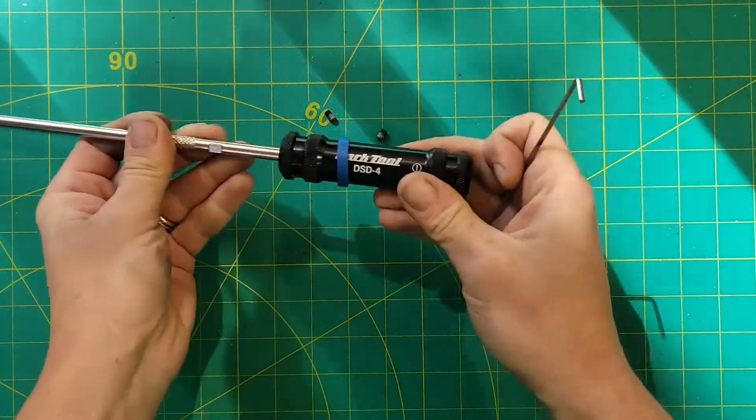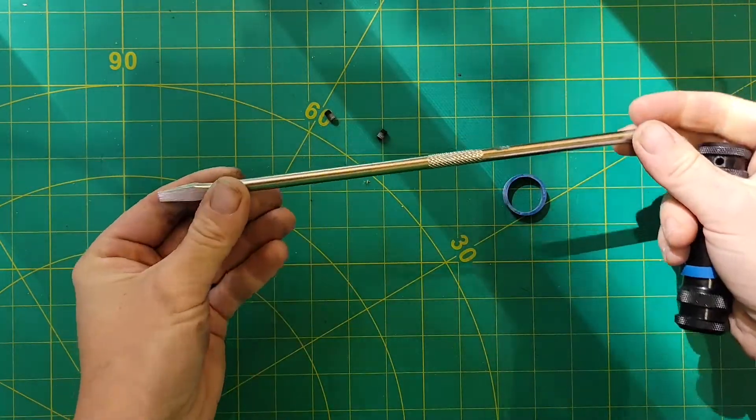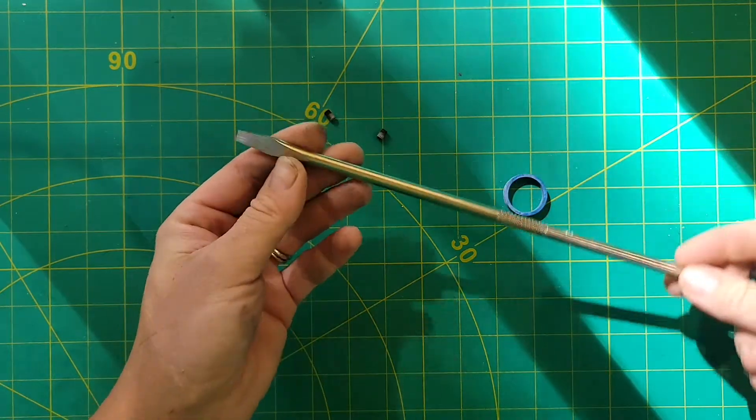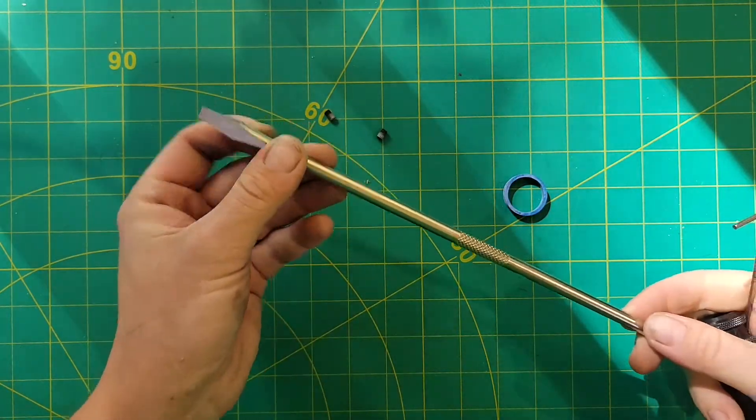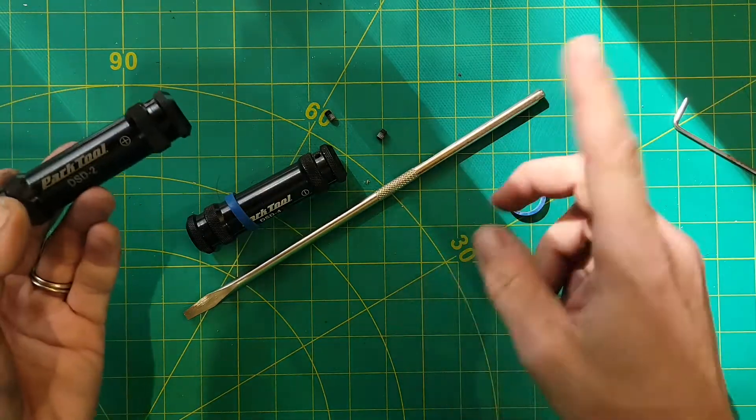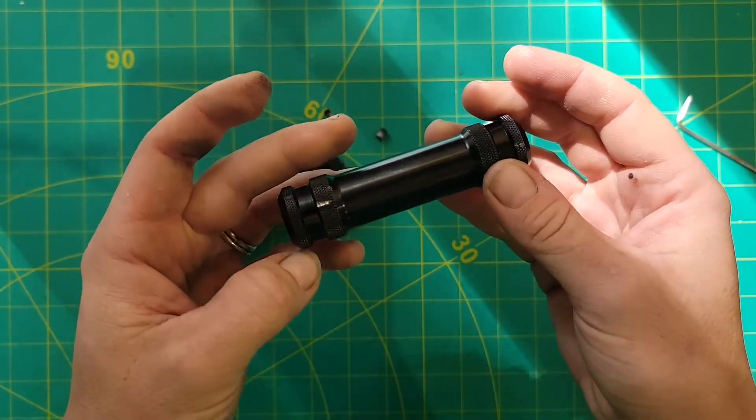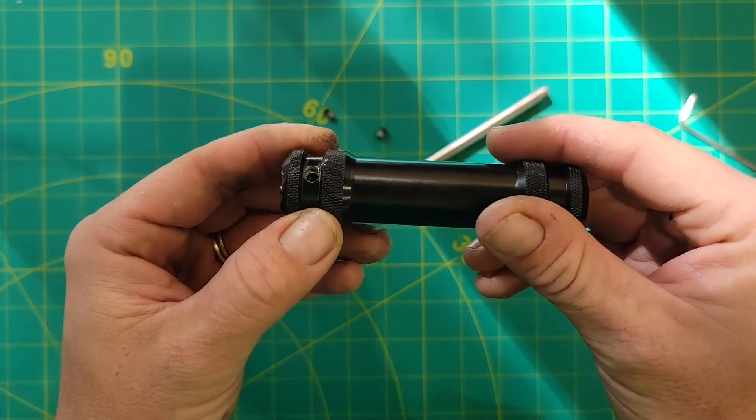And then you have your two grub screws. Handle slides off and you're left with the screwdriver. So you might have noticed this is the flathead screwdriver and that's because when I tried to do this to my DSD-2 one of the grub screws was actually completely stuck in here so I had to end up taking it out with a drill.